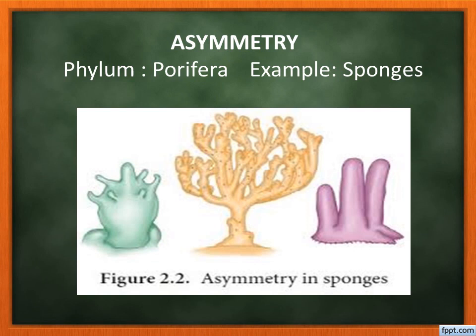Asymmetry means we cannot divide the organism into two equal halves in any plane or direction. Example: Amoeba is shapeless. Similarly, Phylum Porifera (sponges) — we cannot get any two equal halves in any direction. This is called asymmetry.